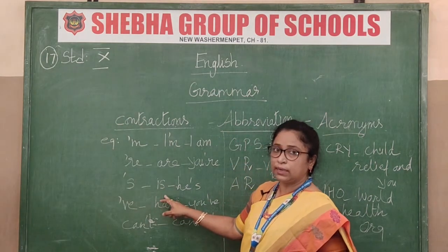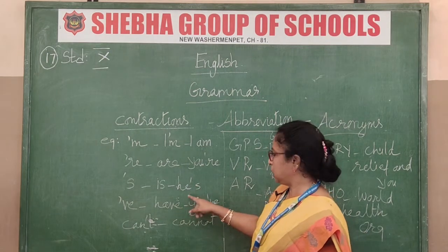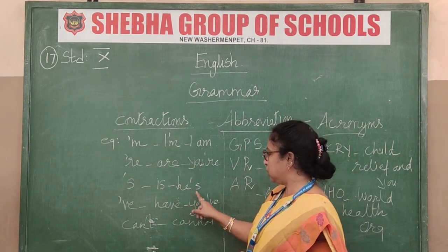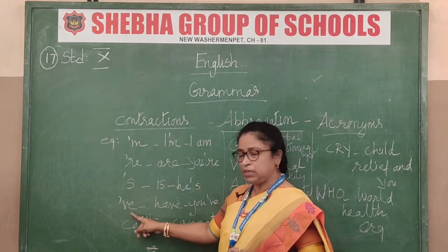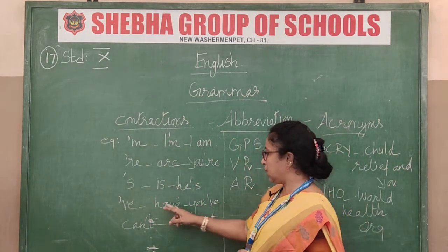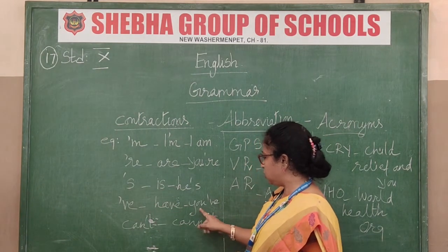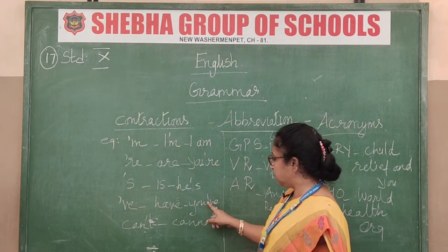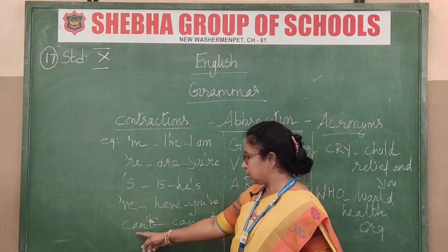Next is 's' with an apostrophe — 'is,' so the 'i' is missing. 'He is' becomes 'he's.' Then 've' with an apostrophe stands for 'have' — the 'h' and 'a' are missing. So 'you have' becomes 'you've.' We contract and make it a smaller word.